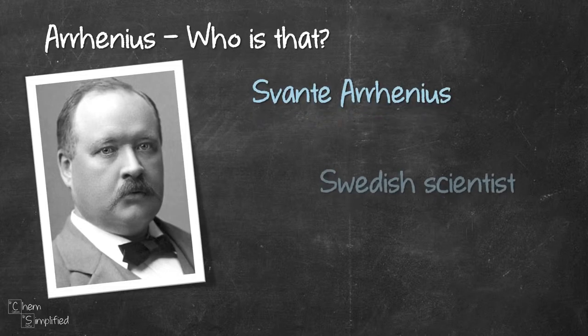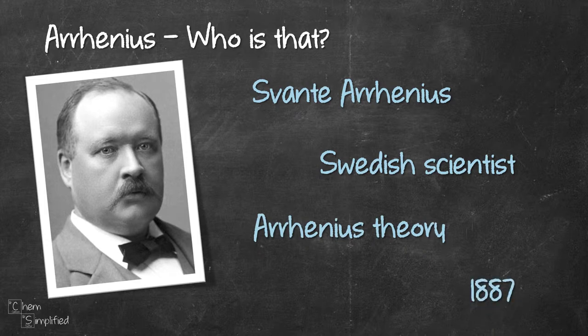Cervantes Arrhenius, a Swedish scientist, introduced Arrhenius theory in 1887.